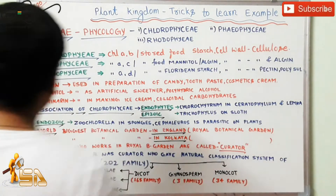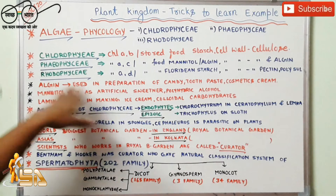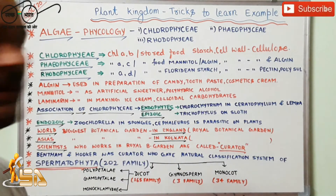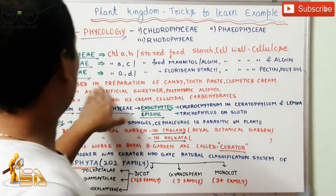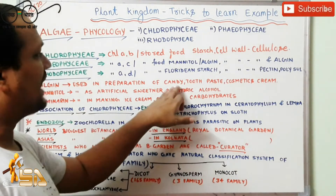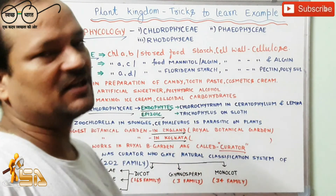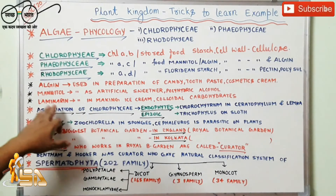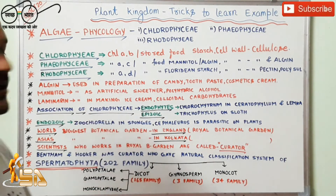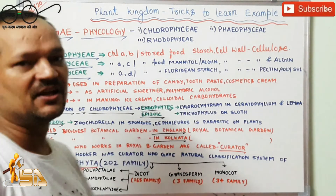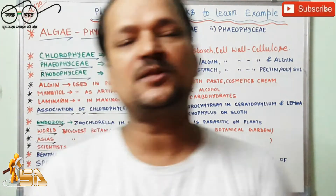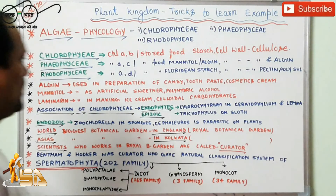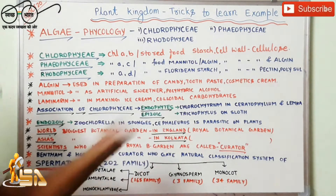Here I have mentioned about algae and the chemical compounds present in the cell wall. These compounds are used for preparing candy, toothpaste, and cosmetic cream. Mannitol is used as an artificial sweetener. It is a polyhydric alcohol, which means the number of alcohol groups is very large, and that is why they are called polyhydric alcohol.